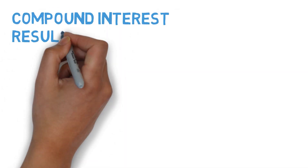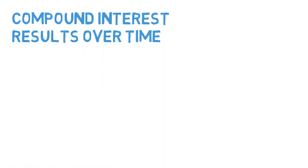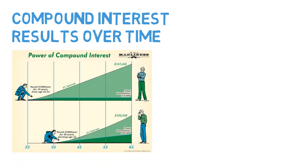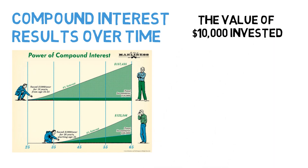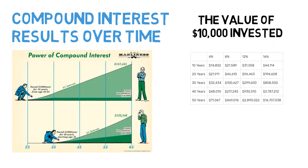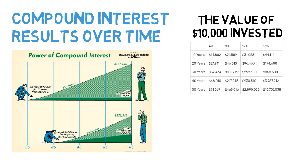Compound interest results over time. The best way to understand these concepts is to put them into a compound interest table that shows you just how substantially your wealth can be helped or hindered by small changes over time. Imagine you have an investor who sets aside a lump sum of $10,000. Take a look at the compound interest chart to see the influence of time and rate of return on his ultimate wealth.